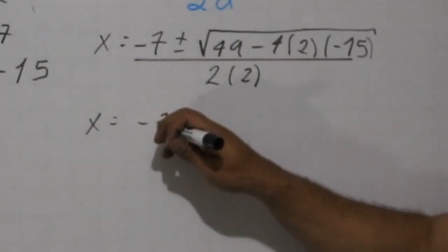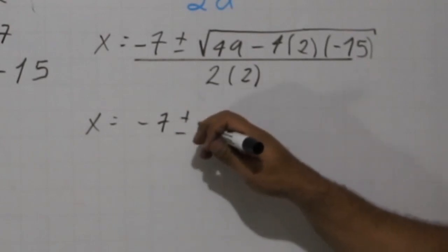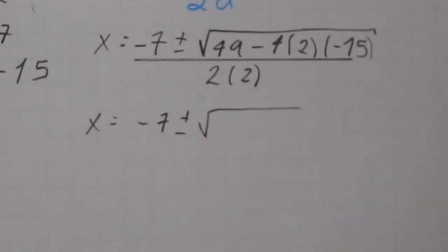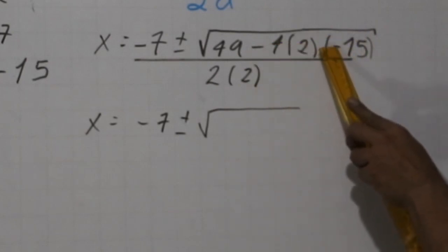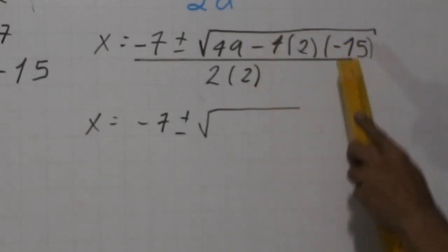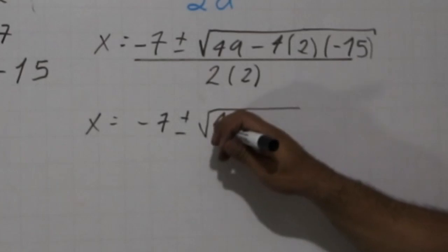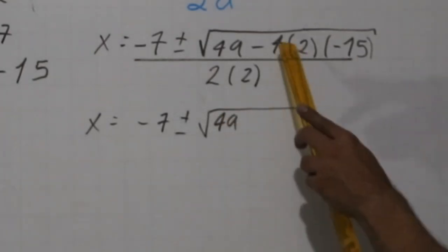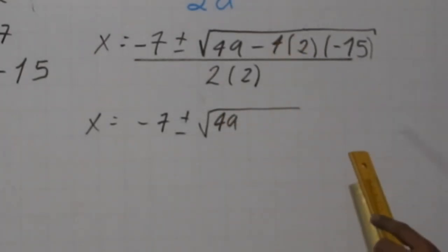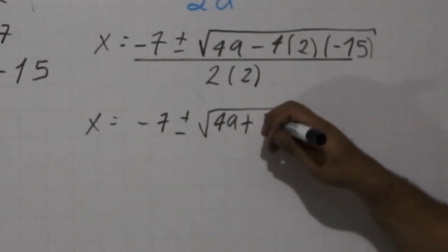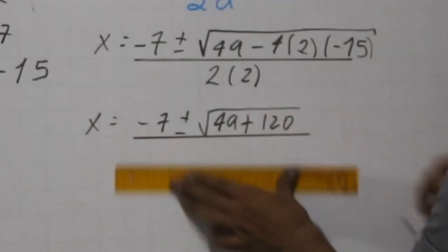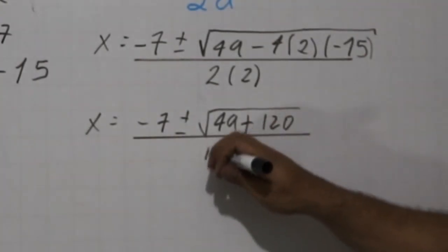Now calculations. We have minus 7, plus minus square root, and we have minus here, and in the multiplication we're going to have another minus, so it's going to be a positive number. We have 49, and 4 times 2, that's 8, and 8 times 15, that's 120. So plus 120, and here we have 4.